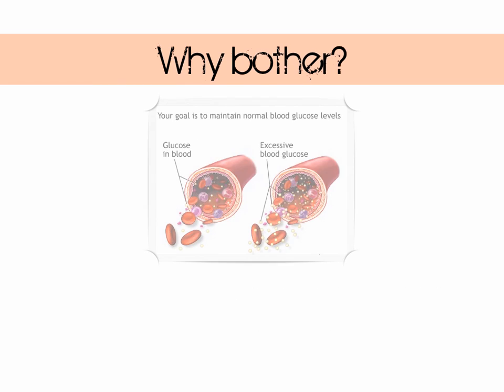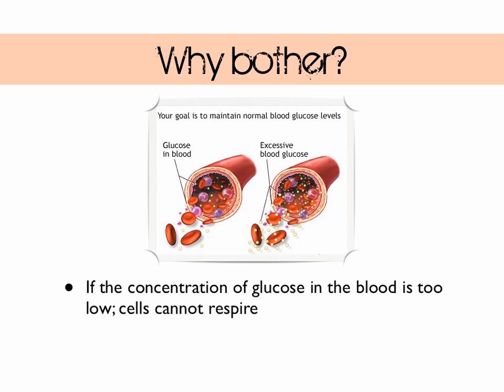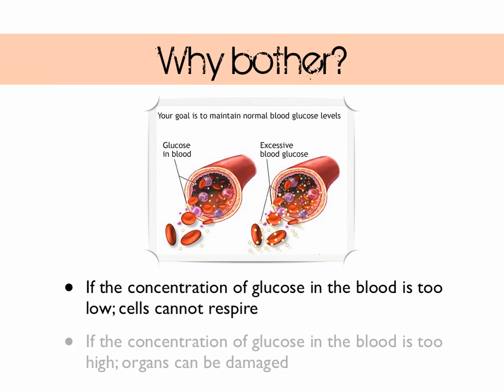Blood glucose levels are another important factor that must be closely regulated. This is a difficult balancing act because glucose is an important commodity within the body. It acts as a respiratory substrate, so it's really important that there is enough glucose in the circulation of the blood to satisfy the demands of the respiring cells. However, if there is too much glucose in the blood some organs can become damaged, so our bodies must have a mechanism to keep the balance right — we'll explore this in more detail in a later video.